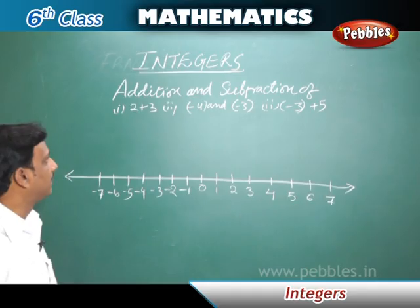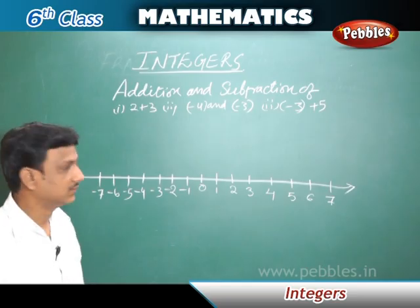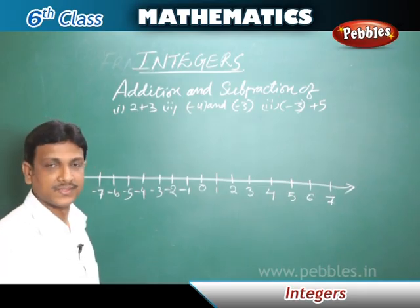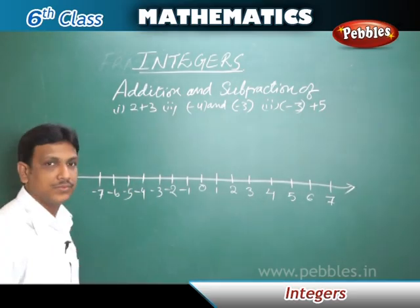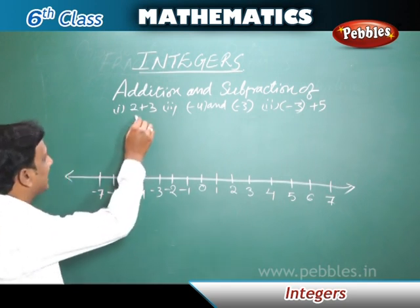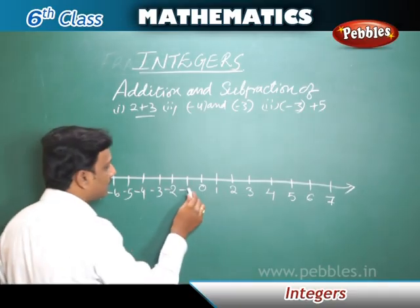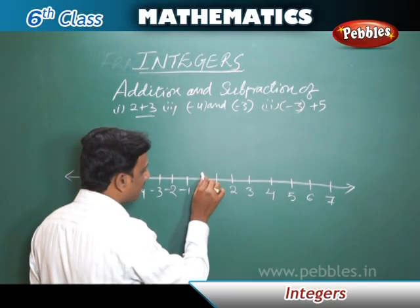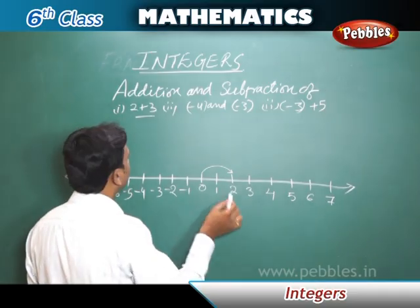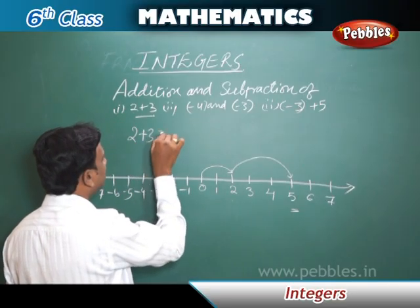Now let us see how to add and subtract on a number line. We will see addition on a number line first. We are going to add some integers — positive numbers, negative numbers, and zero. In the first example, two plus three. Both are positive numbers. On the number line, from zero, we move two positions to the right side. Then, from two, we move three more positions to the right. We reach five. Two plus three equals five.